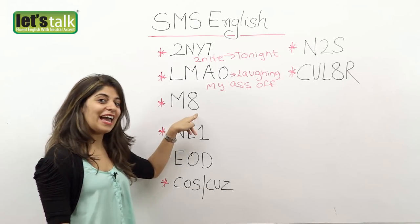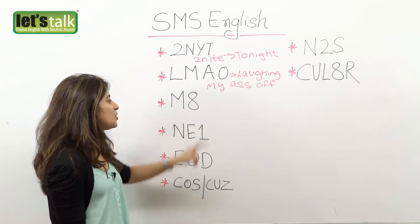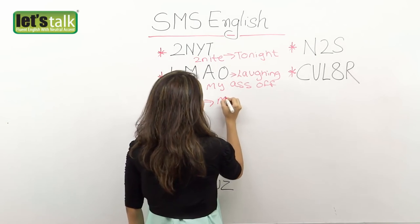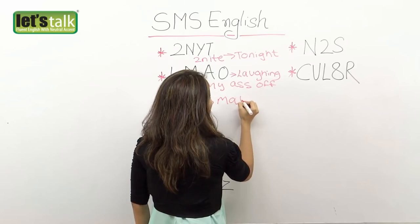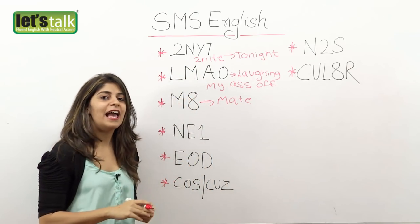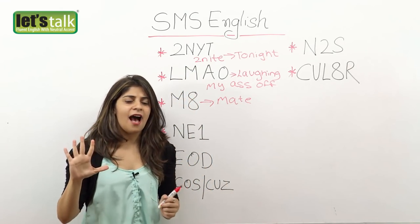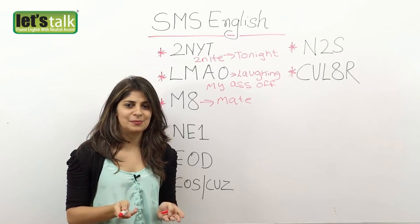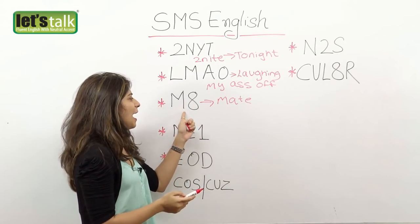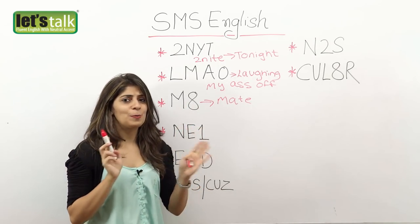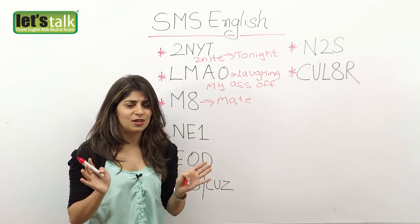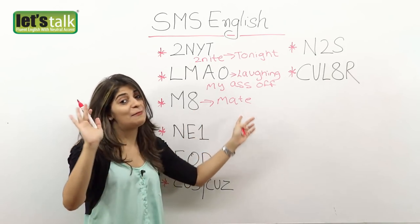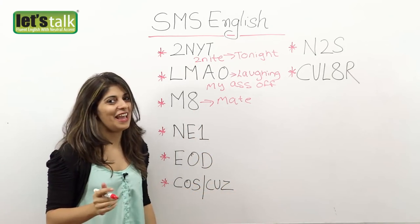Then we have M8, which means 'mate.' So many guys would say 'hey mate, how are you? What's up?' — so that's M8. Don't be confused about what he is trying to say; it means he is saying 'hey mate.'